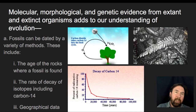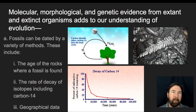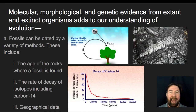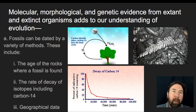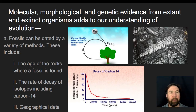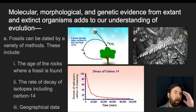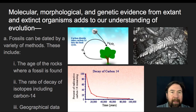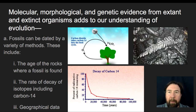In addition to those pieces, we can talk about how molecular morphology and genetic data from both extant — meaning living — and extinct organisms add to our understanding of evolution. We can look at fossils being dated using various methods: the age of the rocks they're in, radiometric dating such as carbon-14, and geographical data. Let's start with talking about the index fossil.